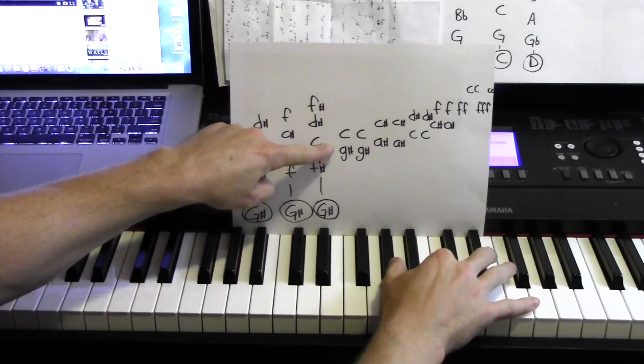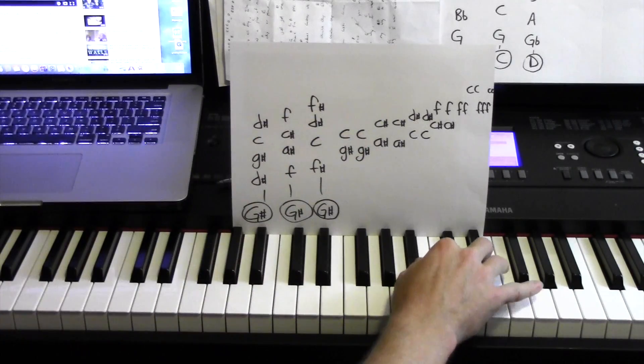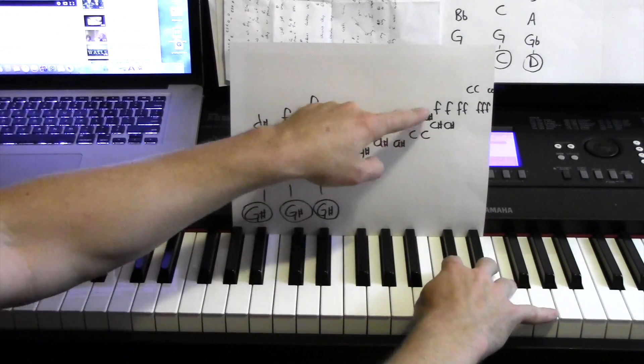Then here we go: G sharp and a C, A sharp and a C sharp, C and a D sharp, C sharp and an F.